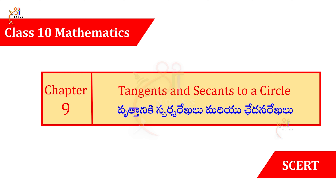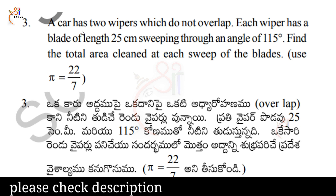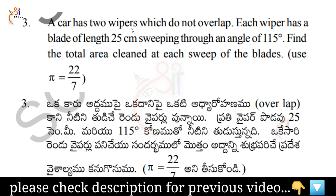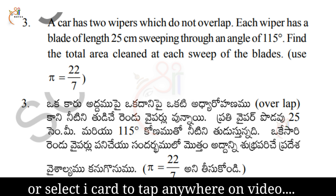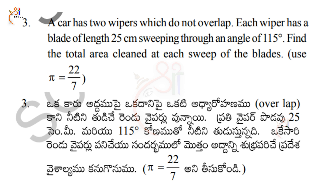In the next video I will show you the exercises. Question number 3: A car has 2 wipers which do not overlap. Each wiper has a blade of length 25 cm, sweeping through an angle of 115 degrees. Find the total area cleaned at each sweep of the blades. Use π equal to 22 by 7.